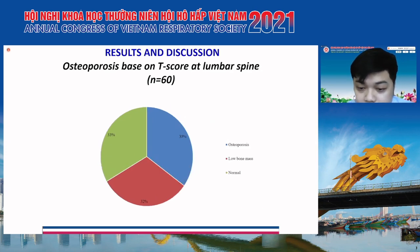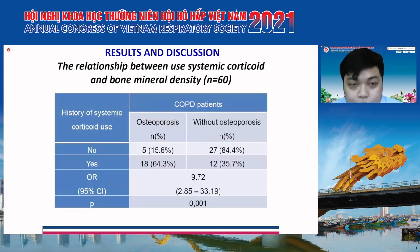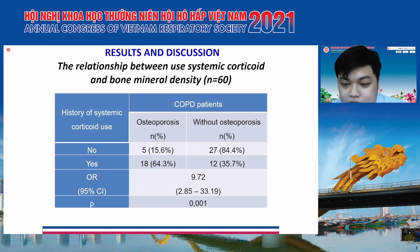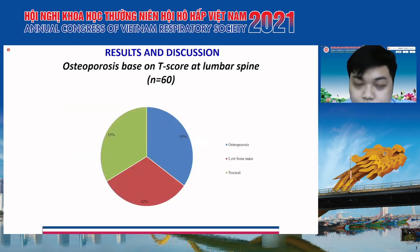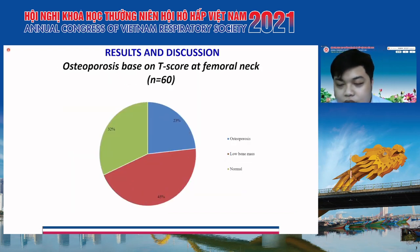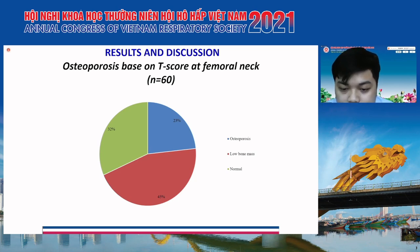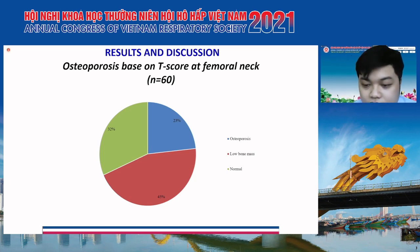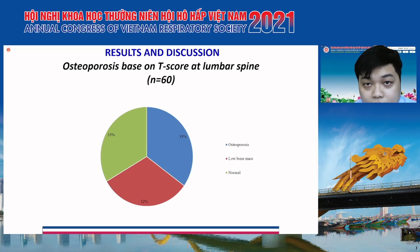The diagnosis of osteoporosis is based on T-score at two positions: the femoral neck and lumbar spine (L1–L5). Here are the results of the T-scores at the femoral neck and lumbar spine.